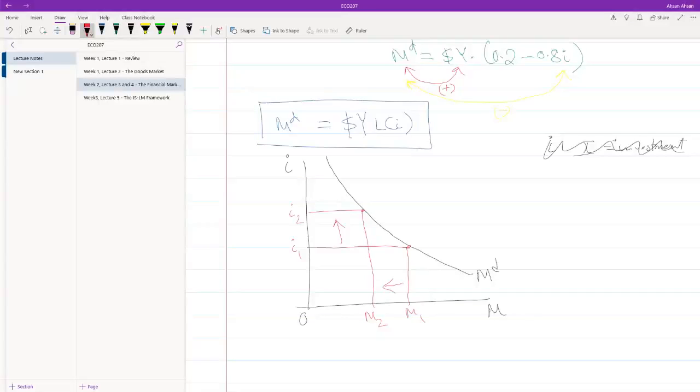Similarly, notice that there are two things that affect our money demand: one is i, and the other is y. What would happen if our income went up? Effectively, we have M^d2, and what we see is that at the same interest rate, money demand has increased. So initially at this level of interest rate of i2, our money demand was m2, but now because we have more income—y has gone up—at the same level of interest rate, our money demand has gone up to m3.